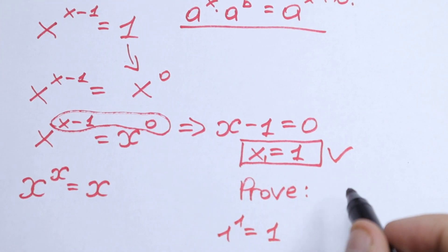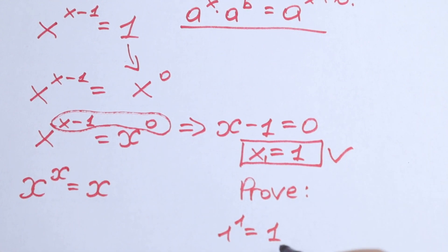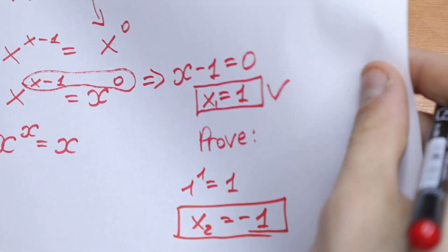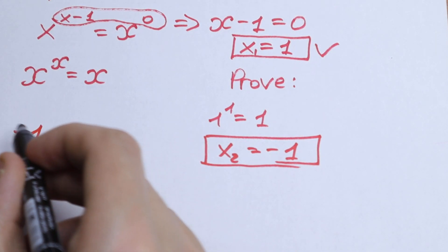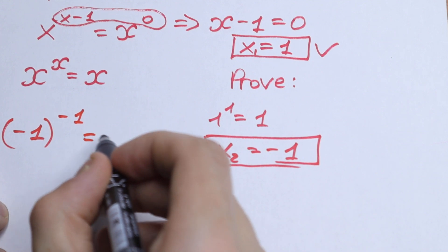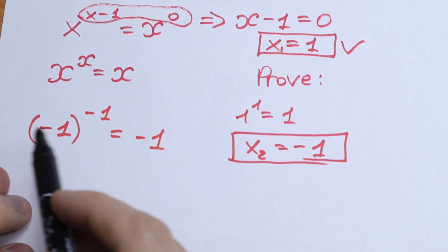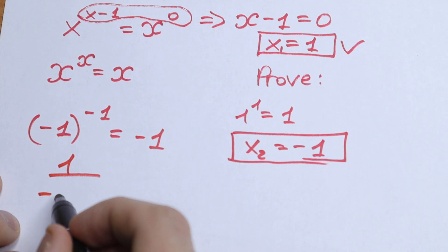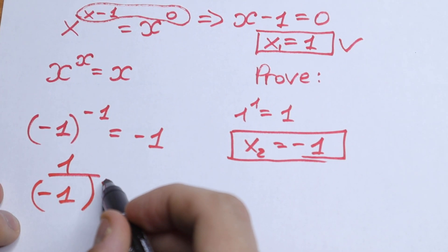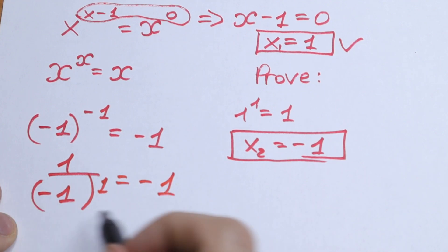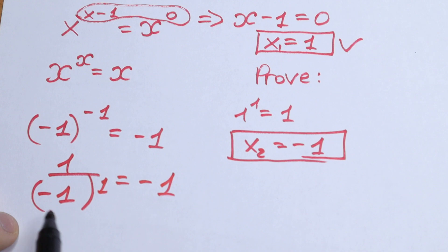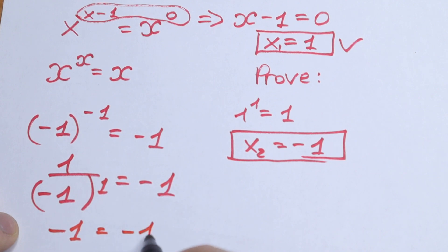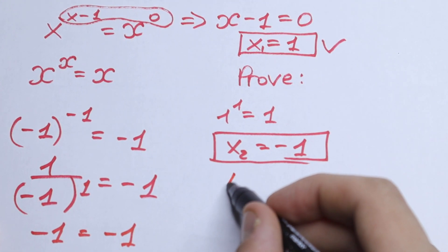Moreover, x equal to minus 1 is a root as well. Take a look — if we plug in minus 1, we have minus 1 to the power minus 1 equal to minus 1. Bringing minus 1 to the denominator, we get 1 divided by minus 1, which equals minus 1. That is correct, so x equals minus 1 is also a valid root.